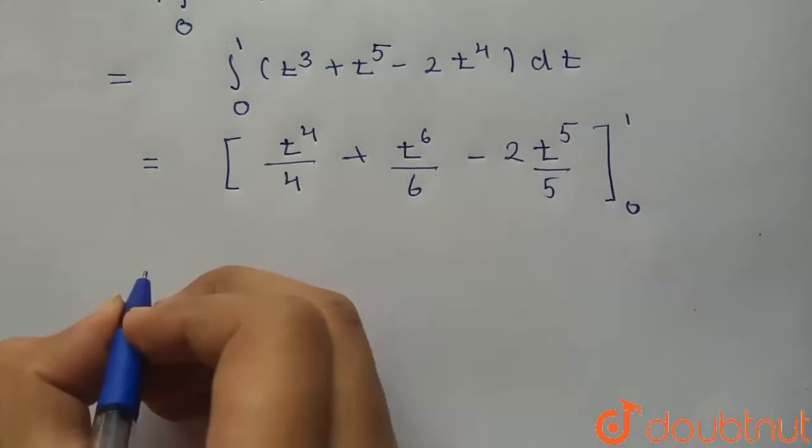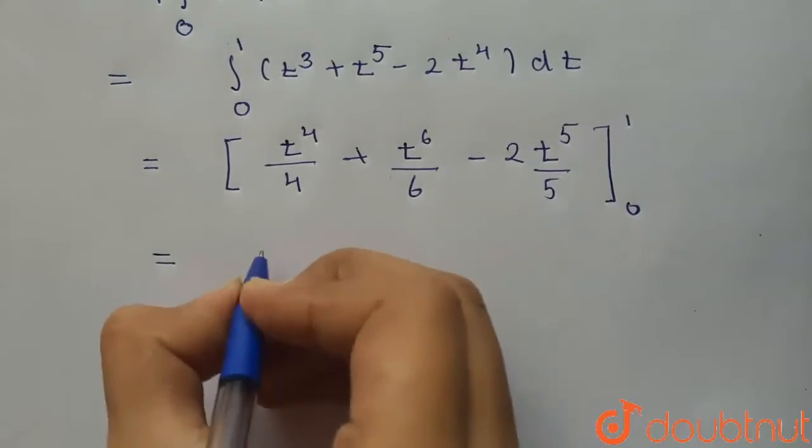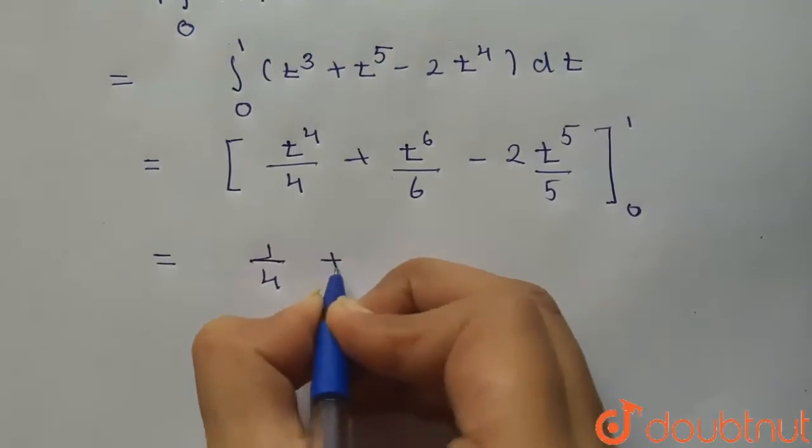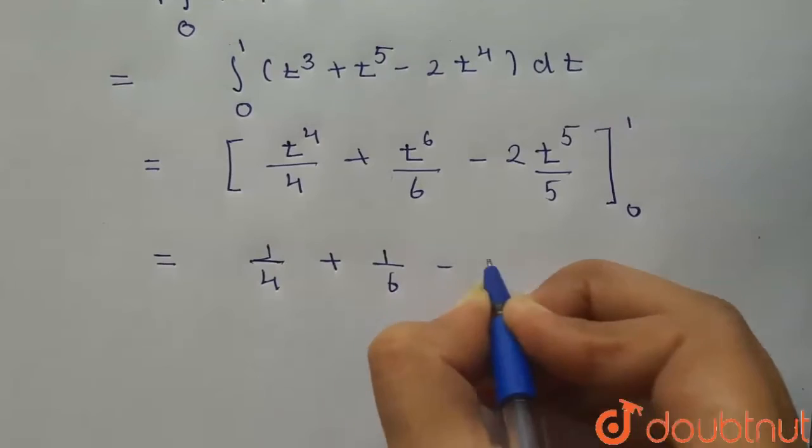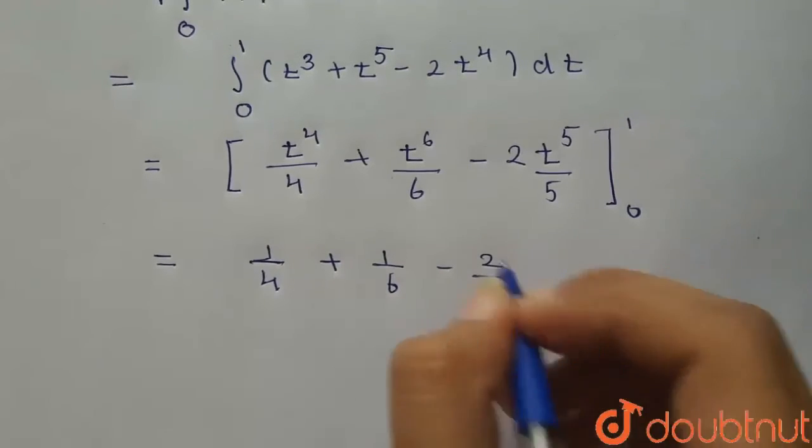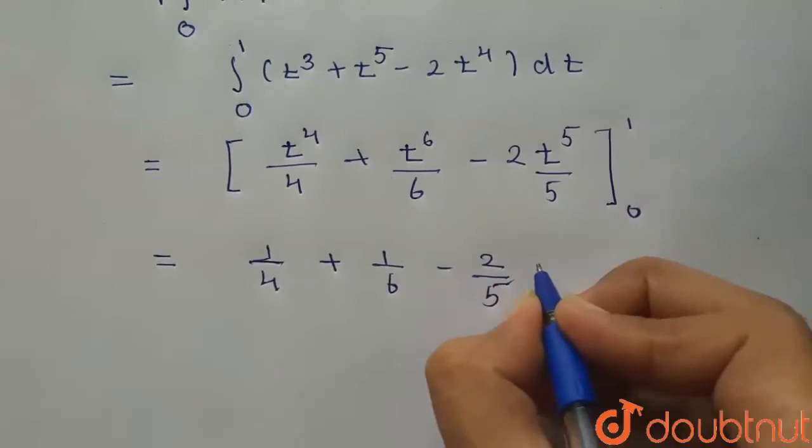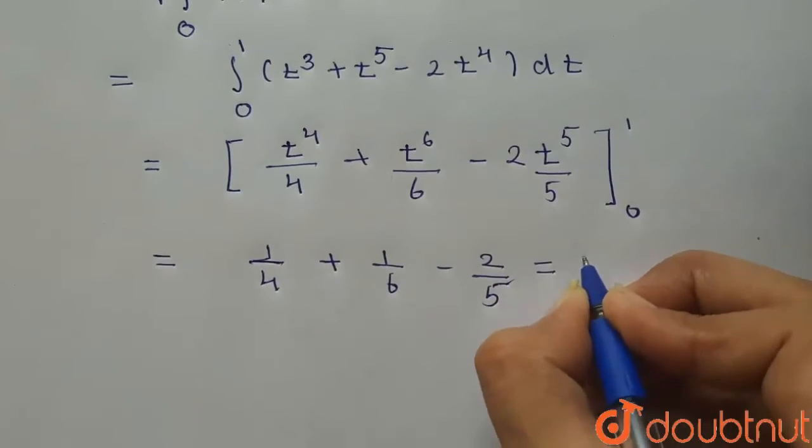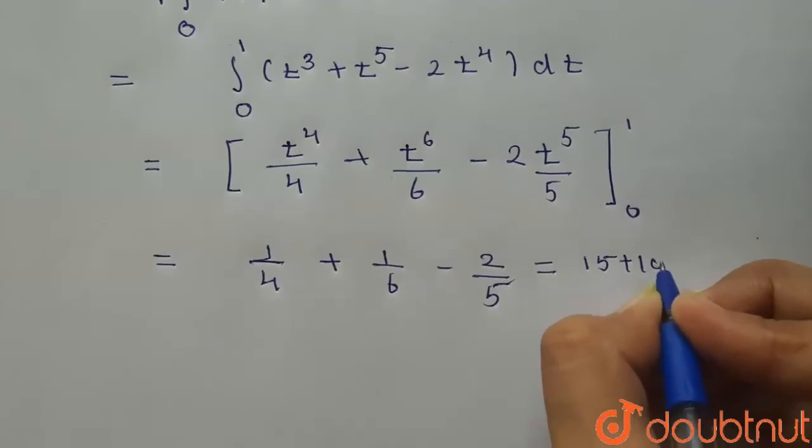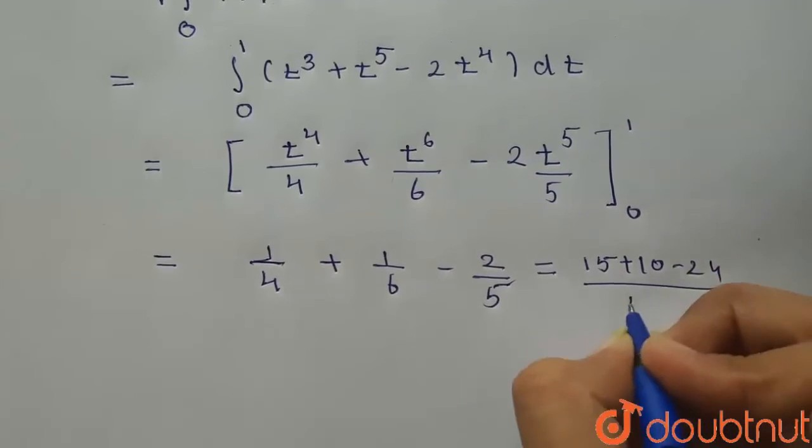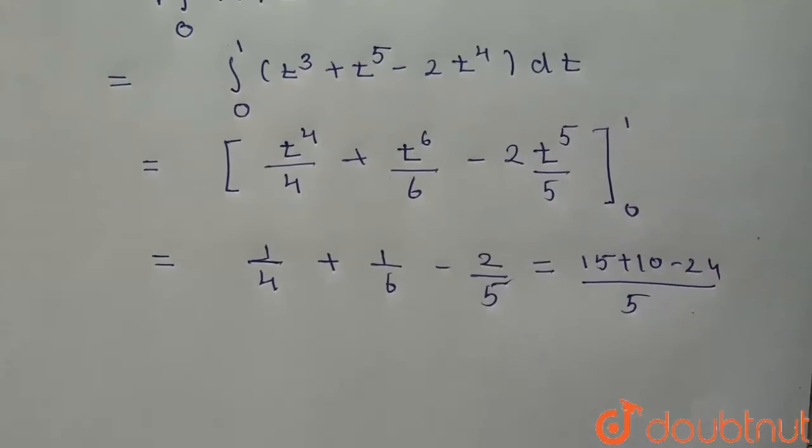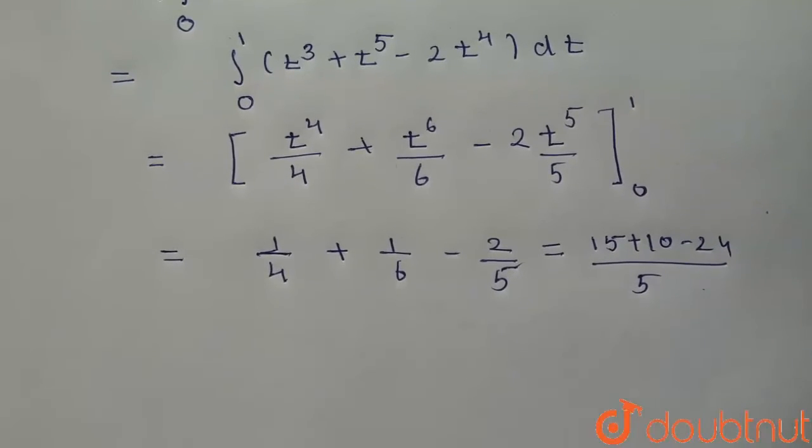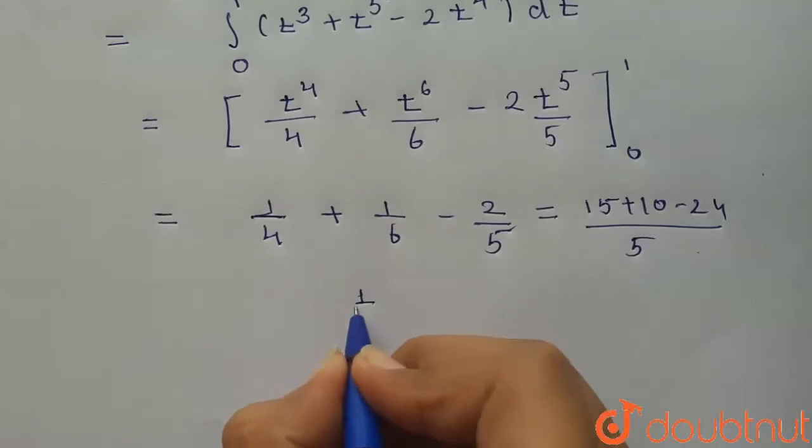Putting the upper limit, we get 1/4 plus 1/6 minus 2/5. The lower limit gives 0. Simplifying, we get (15 plus 10 minus 24)/60 equals 1/60.